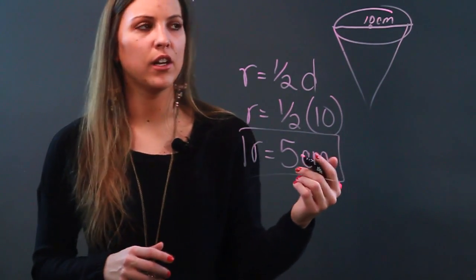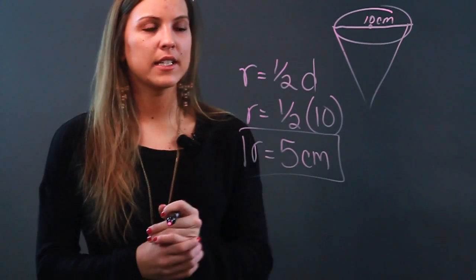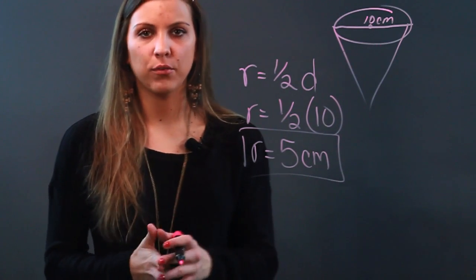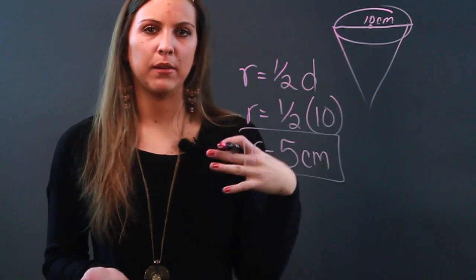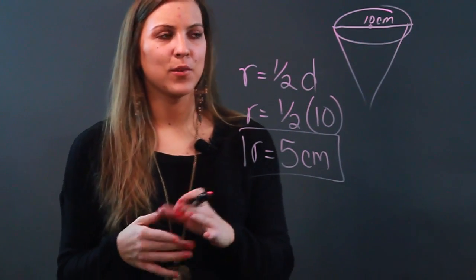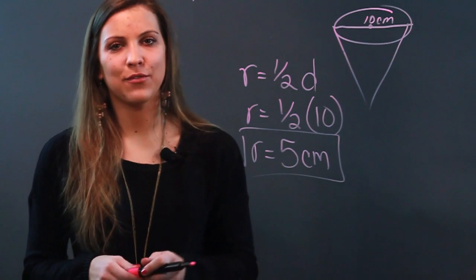The height is really irrelevant here if you're given the diameter. Anytime you're given the diameter and you need to find the radius, all you want to do is cut that diameter in half. So if my diameter was 20, my radius would be 10. That's how you use the diameter and height to find the radius.